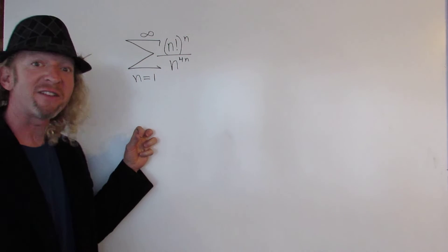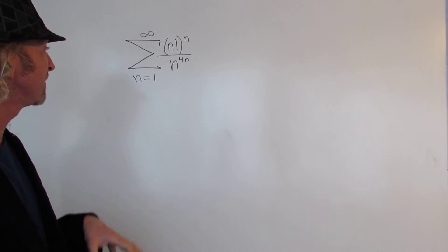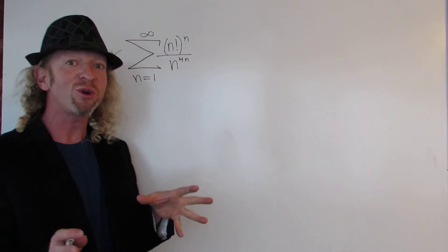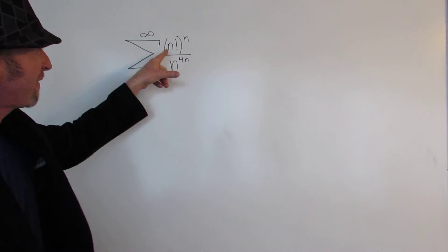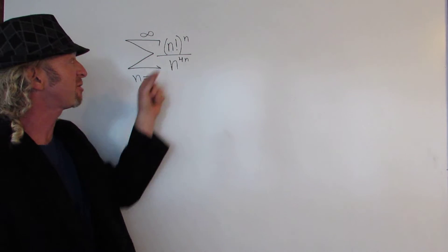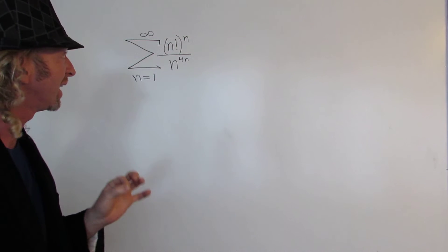What's up YouTube? In this problem we have an infinite sum, and we have to determine if it converges or diverges. So we have n factorial to the nth power over n to the 4n.